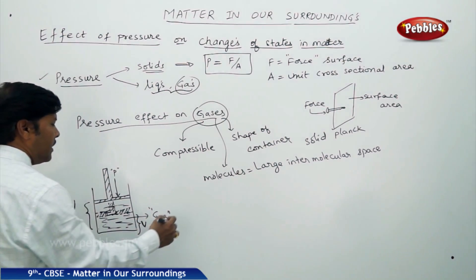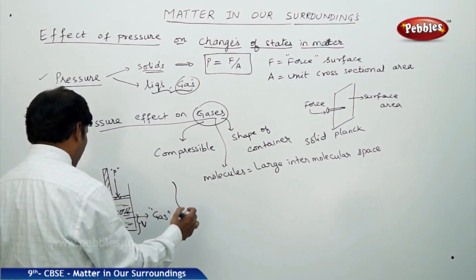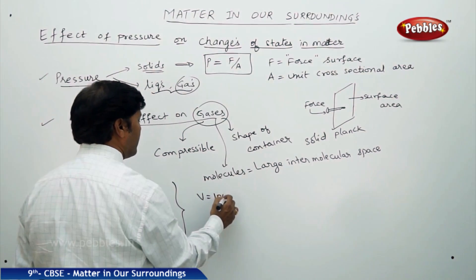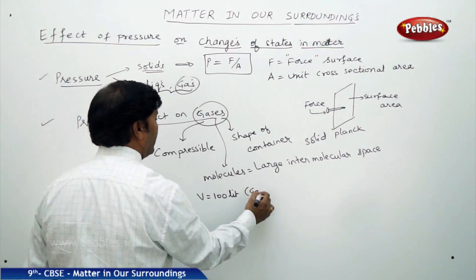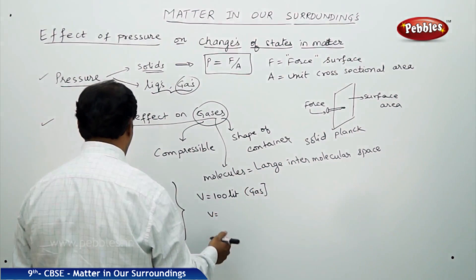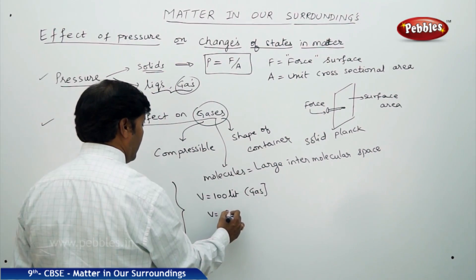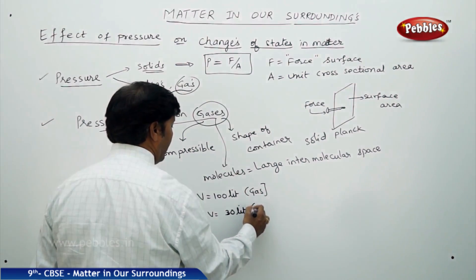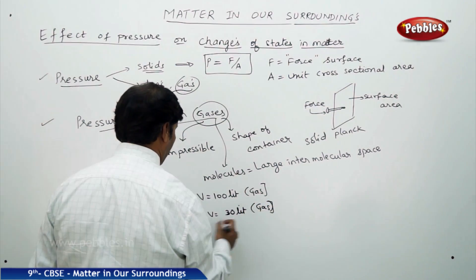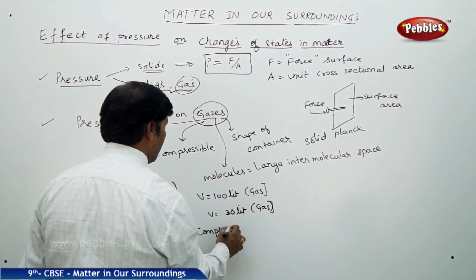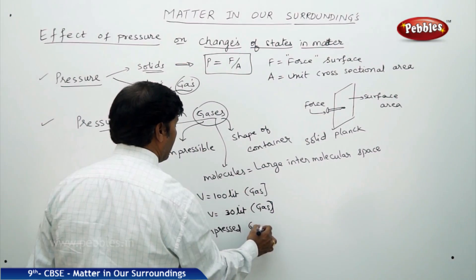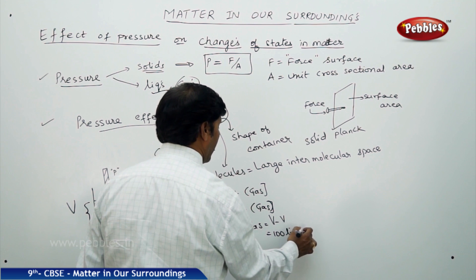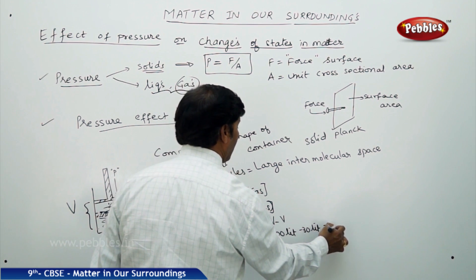From this observation, it is very clear that the new volume is lesser than the initial volume. If the initial volume is, say, 100 liters and the new small v is 30 liters, then the compressed gas equals capital V minus small v, which is 100 minus 30, equal to 70 liters.